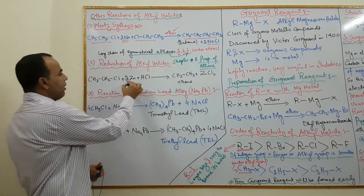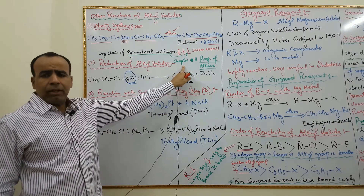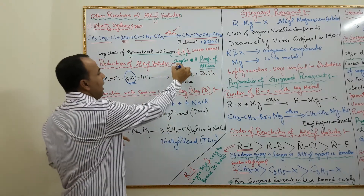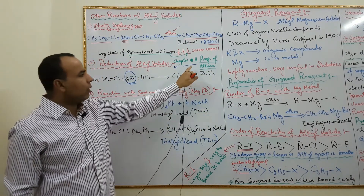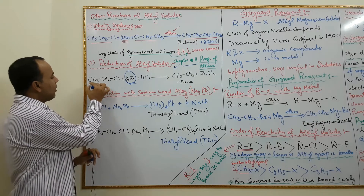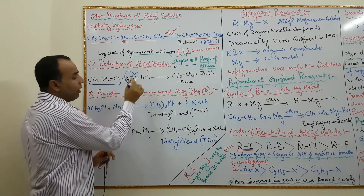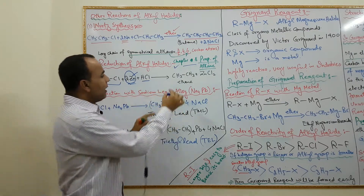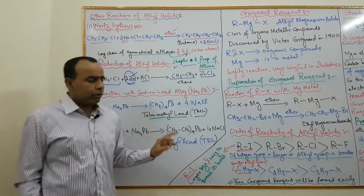The second reaction is reduction of alkyl halides. Here, zinc acts as a reducing agent. We have already studied this reaction and its mechanism in Chapter 8, preparation of alkyl halides. In the presence of zinc as reducing agent and hydrochloric acid, ethane is produced and zinc chloride is formed.